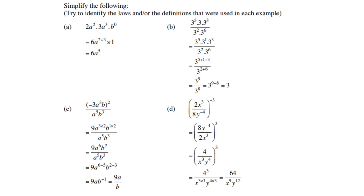Let's do our first example — simplify, and try to identify the laws. Part a: 2a squared times 3a cubed times b to the power 0. We multiply 2 times 3 to get 6; for a we add the exponents; and b to the power 0 is 1. Therefore the answer is 6a to the power 5.